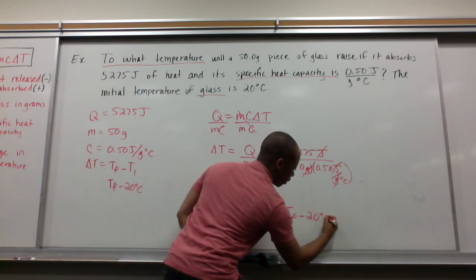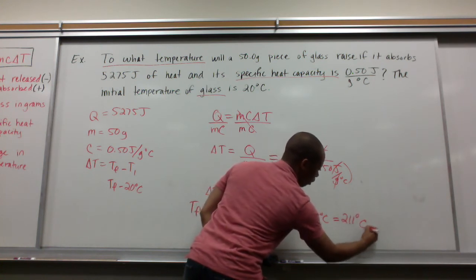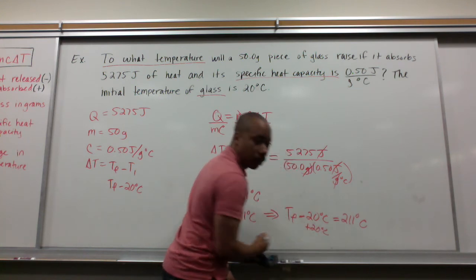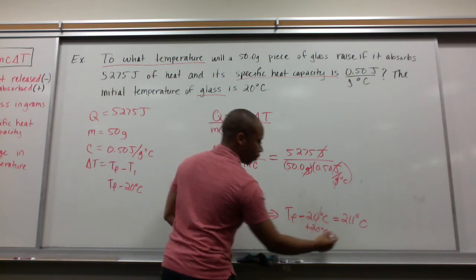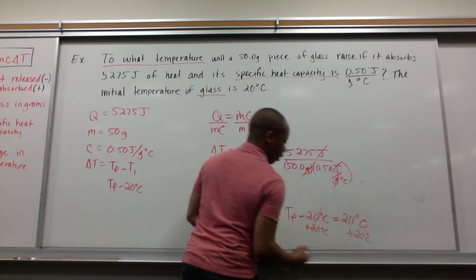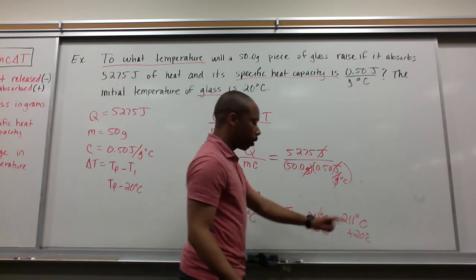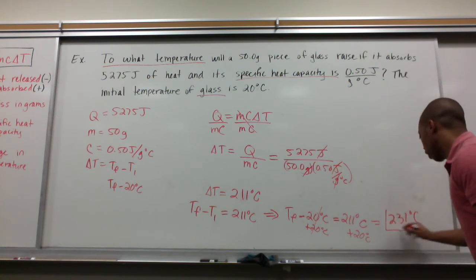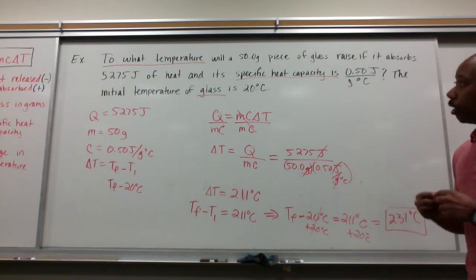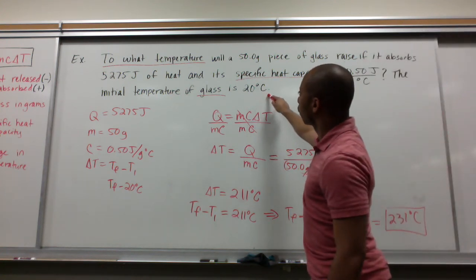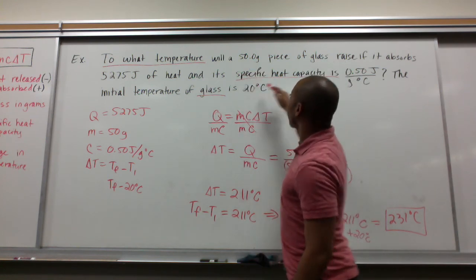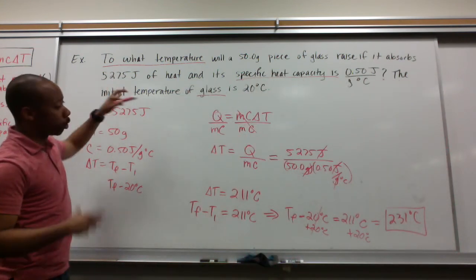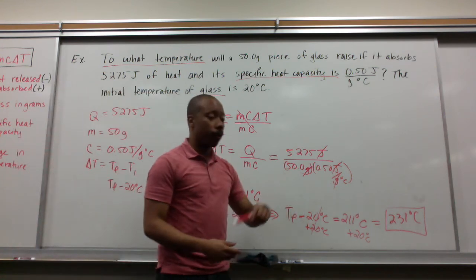Now, that's what delta T equals, but we want to know the final temperature. So, we know delta T equals Tf minus Ti, and that equals 211 degrees Celsius, but we know that Ti is 20, so I'm going to rewrite this. Tf minus 20 degrees Celsius equals 211 degrees Celsius. I'm going to add 20 degrees Celsius to both sides to isolate this Tf. And Tf equals 211 plus 20 is 231 degrees Celsius. That would be your final answer. So, if you started out from a temperature of 20 degrees Celsius and glass, 50 grams of glass had a specific heat of 0.5 joules per gram degree Celsius, and you input 5,275 joules of energy, your final temperature would be 231 degrees Celsius.